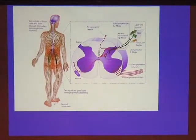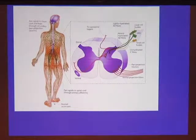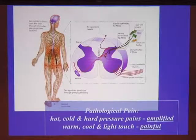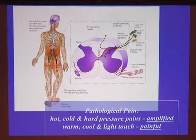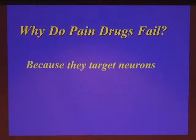We're all aware that the pain pathway classically consists of a chain of neurons. Pain is picked up by sensory neurons that relay information to the spinal cord and from spinal cord to brain. This pain processing is very dynamic — it can be suppressed or amplified. When pain becomes pathological, hot, cold, and hard pressure pains are greatly amplified, and non-painful warm, cool, and light touches are now perceived as very painful. Given we know so much about pain processing, why do currently available pain drugs fail so miserably in treating neuropathological pain? One possibility is because they're engineered to target neurons.